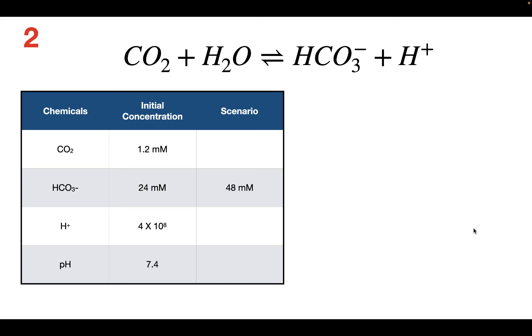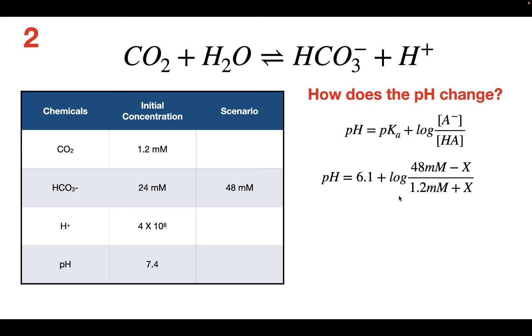Now we're going to do scenario number two. What we're doing is we're doubling the amount of bicarbonate in the system. We're going to see how the pH changes again. We can do this by using the Henderson-Hasselbalch equation, and we plug in our specific values right here.